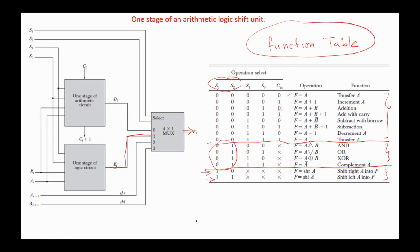Regarding the first eight arithmetic operations, we already explained them. On S0,S1 = 0,0, we have a transfer or increment depending on the carry-in. On 0,1, addition or addition with carry. On 1,0, subtract with borrow or subtract. And on 1,1, if carry-in is 0, then we have decrement, and if carry-in is 1, we have a transfer. Regarding the logic micro operations, on S0,S1 = 0,0 we have AND; 0,1 OR; 1,0 exclusive OR; and 1,1 complement.